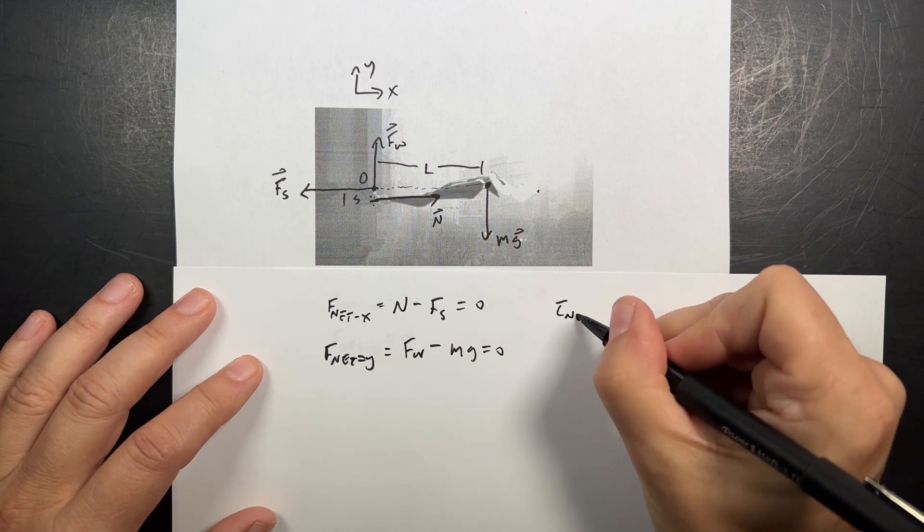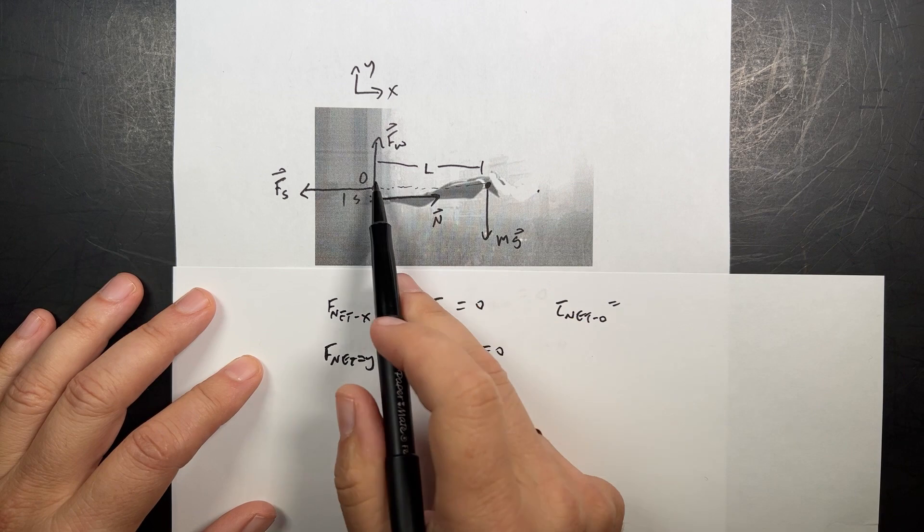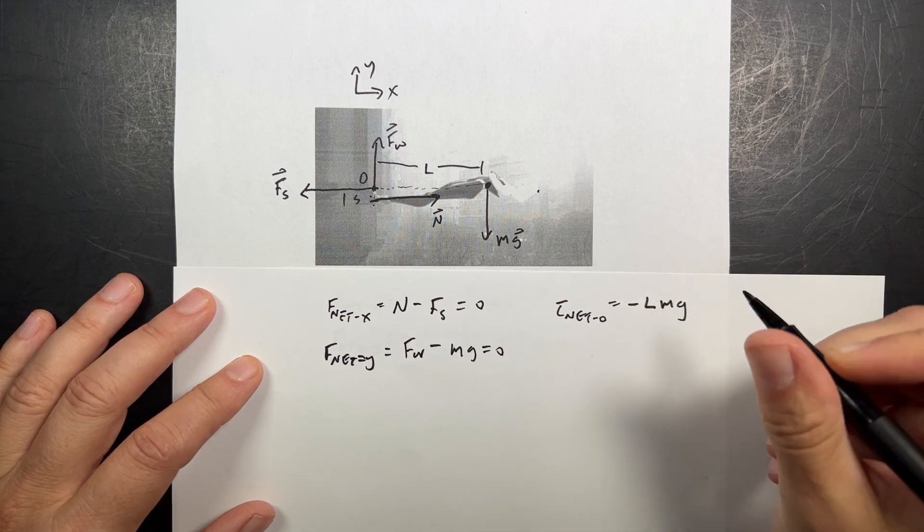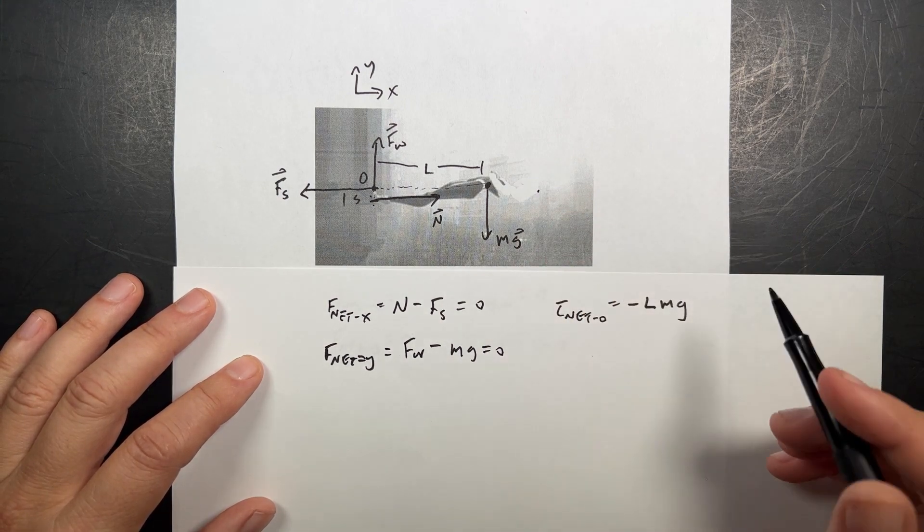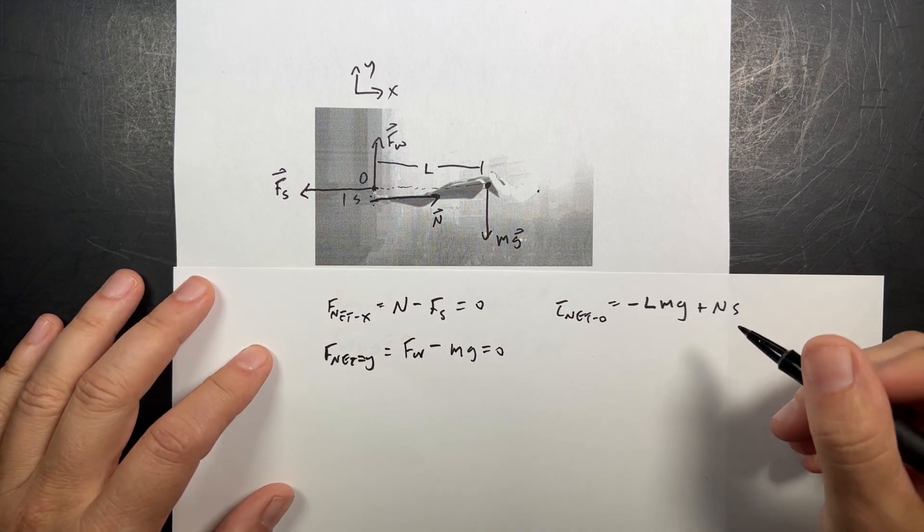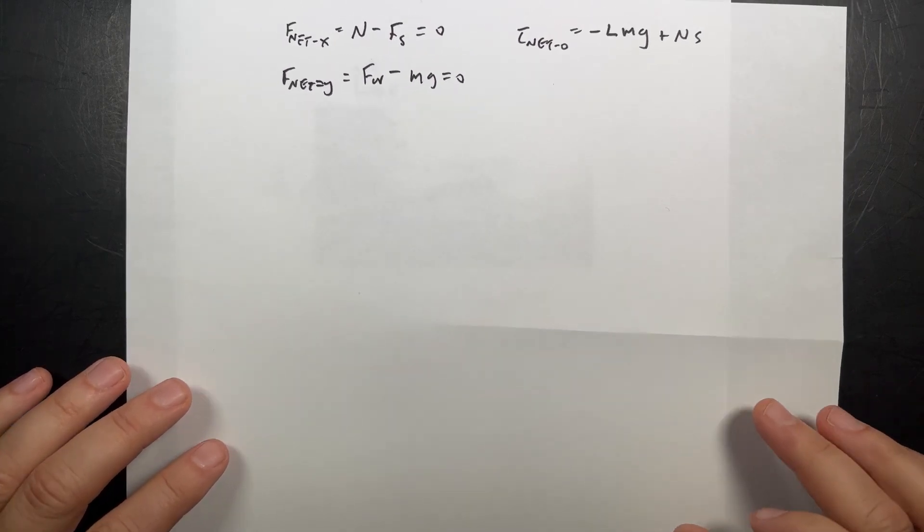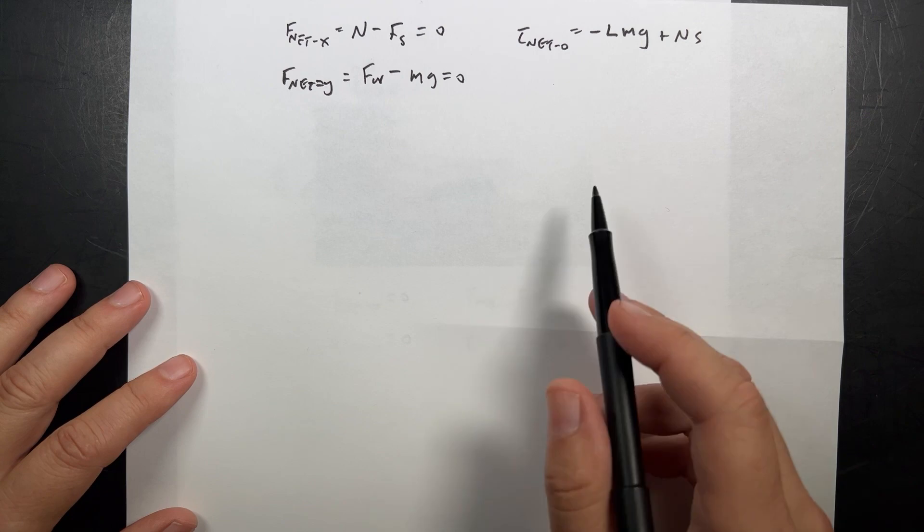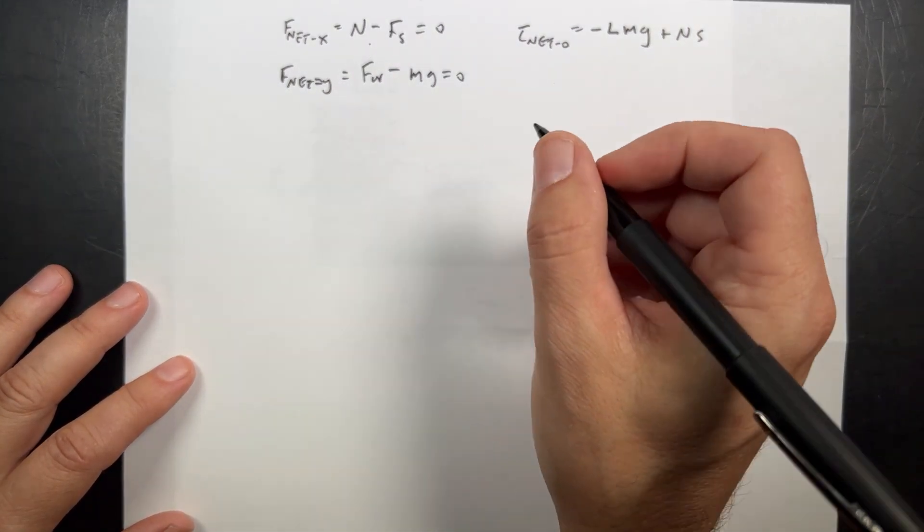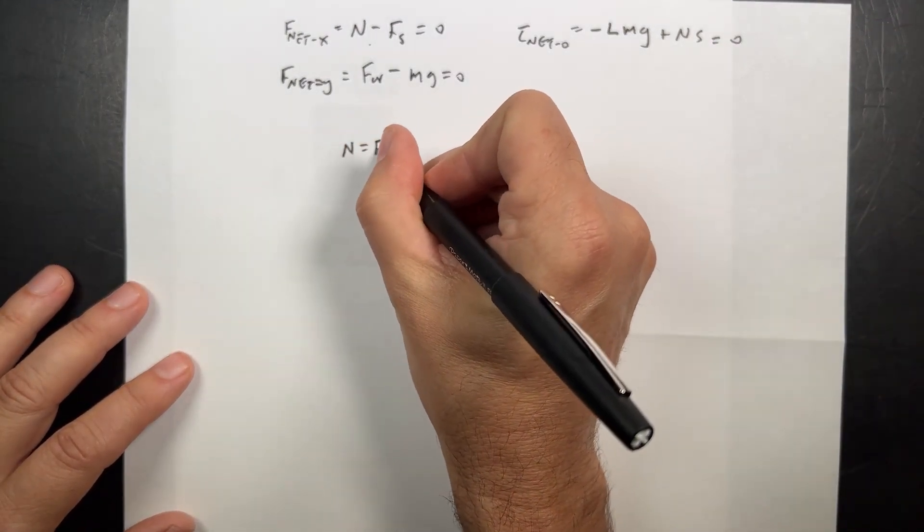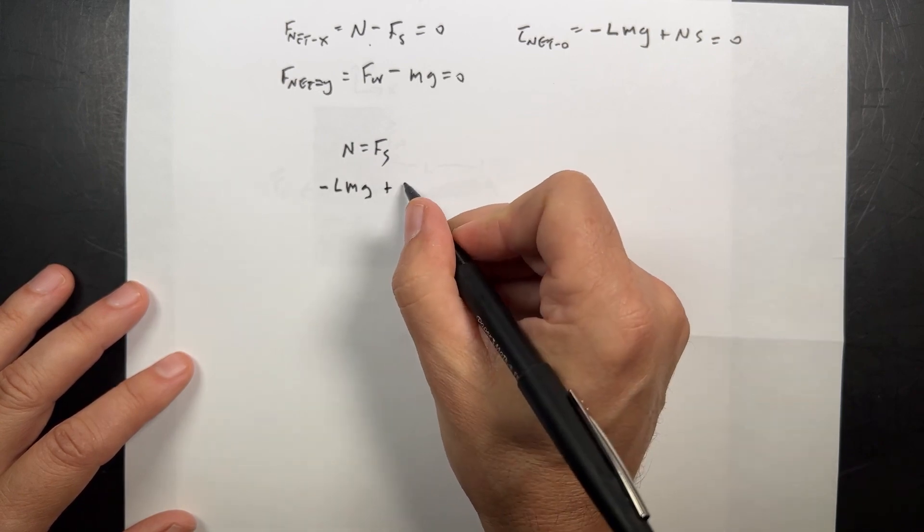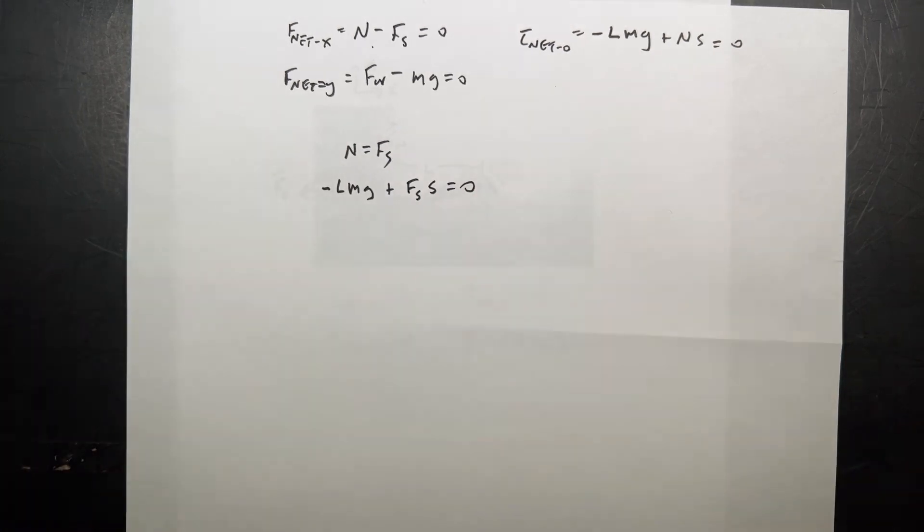So for the torque net about point O, R is L distance and there's a 90 degree angle between these two. So it's going to equal negative Lmg. It's negative not because g is negative but because it would be a clockwise rotation. And then this is going to be plus N times S times sin θ. So I have these three equations and I want to solve for the spider force. From the first equation, N equals F_s. If I plug that in, I get negative Lmg plus F_s S equals zero.